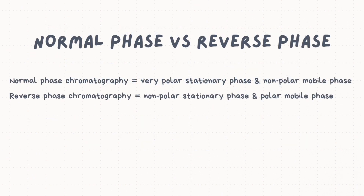Next, let's look at the two main chromatography phases used in HPLC, which are the normal phase and the reverse phase. The main difference between them is that normal phase chromatography has a very polar stationary phase and a non-polar mobile phase, while reverse phase is the opposite.